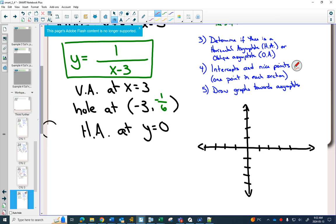I have a vertical asymptote at x equals 3. I would have a horizontal asymptote at y equals 0. And I could already draw my hole at negative 3, negative 1/6 on my graph.